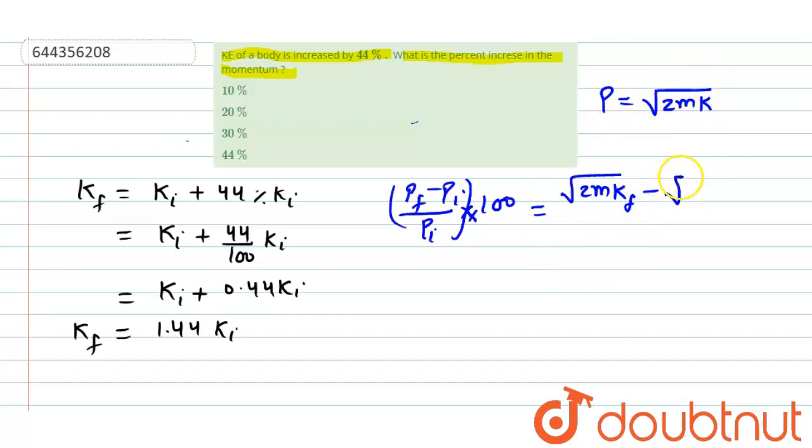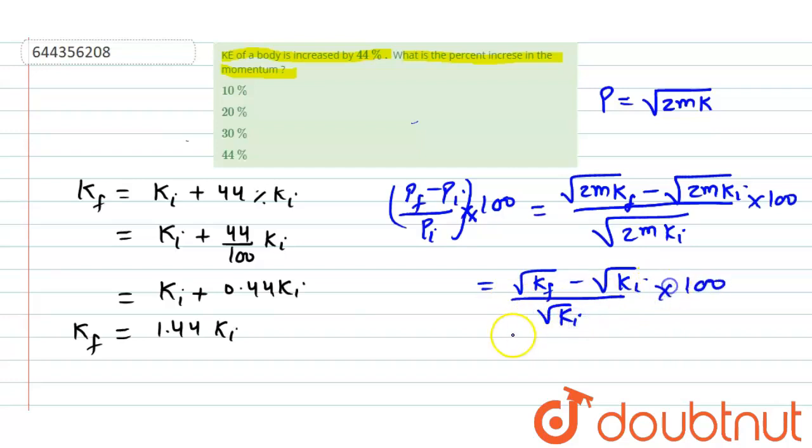We can write it as root 2M K final minus root 2M K initial divided by root 2M K initial, multiply 100. Root 2M K final is P final minus root 2M K initial. K final is 1.44 times K initial, substitute the value of K final minus root K initial divided by root K initial into 100.